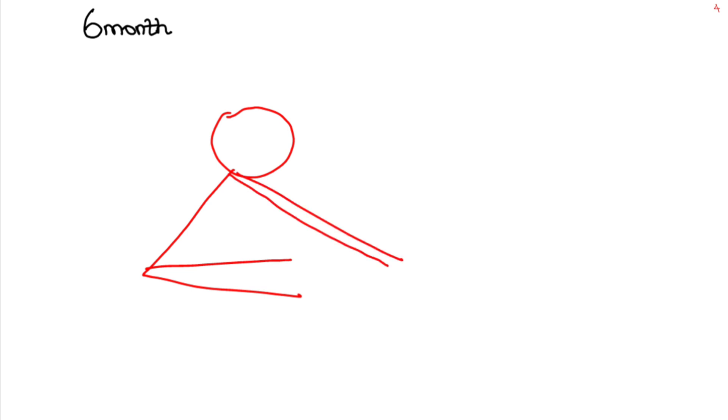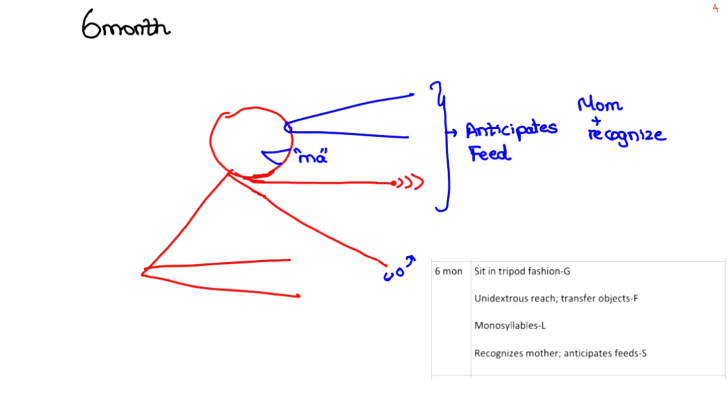Sits up with the support of her hands which looks like a tripod and transfers objects if given any. Saw her mother and recognized her, calls her mom, tries to reach her with this one hand and anticipates feed. Sitting in tripod is gross motor, recognizing mother and anticipate feed is social.